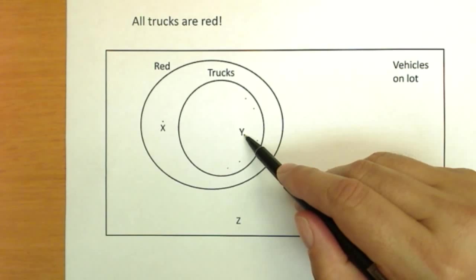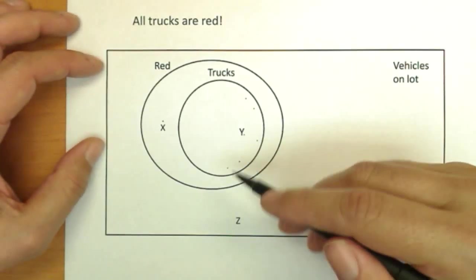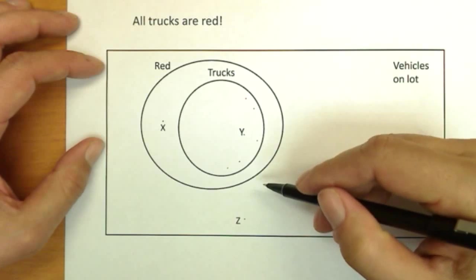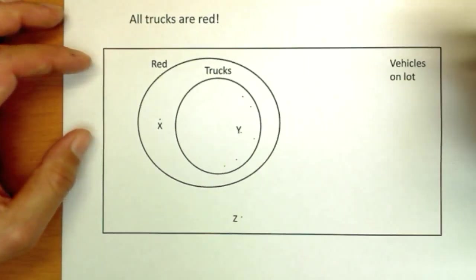This is a truck, and by definition it's red because all the trucks are red in this picture. And this is not red, and therefore we know for sure it's not a truck as we move into logic studies here in a moment.